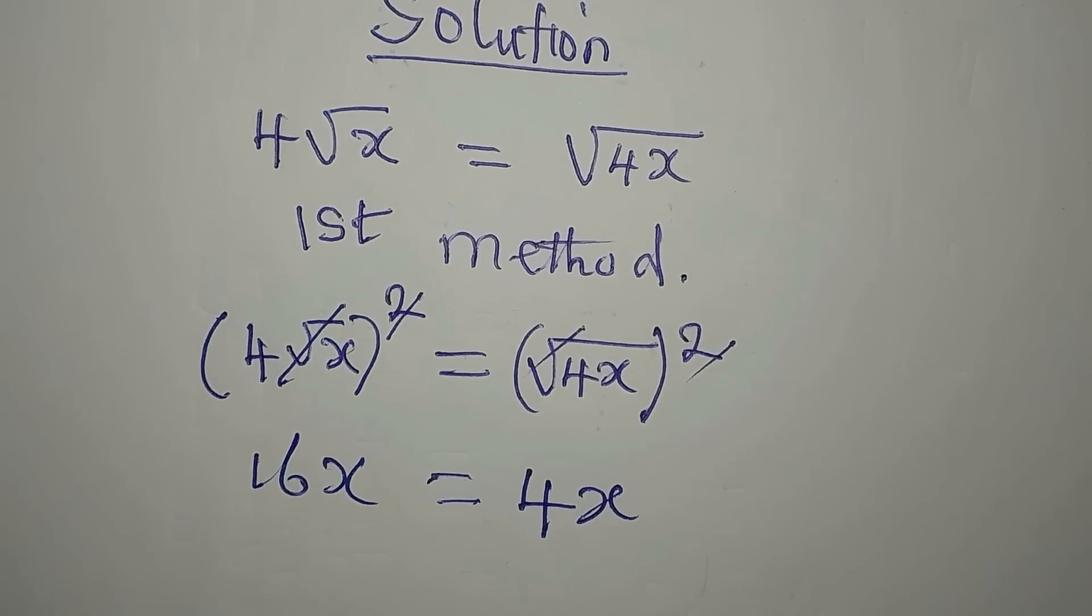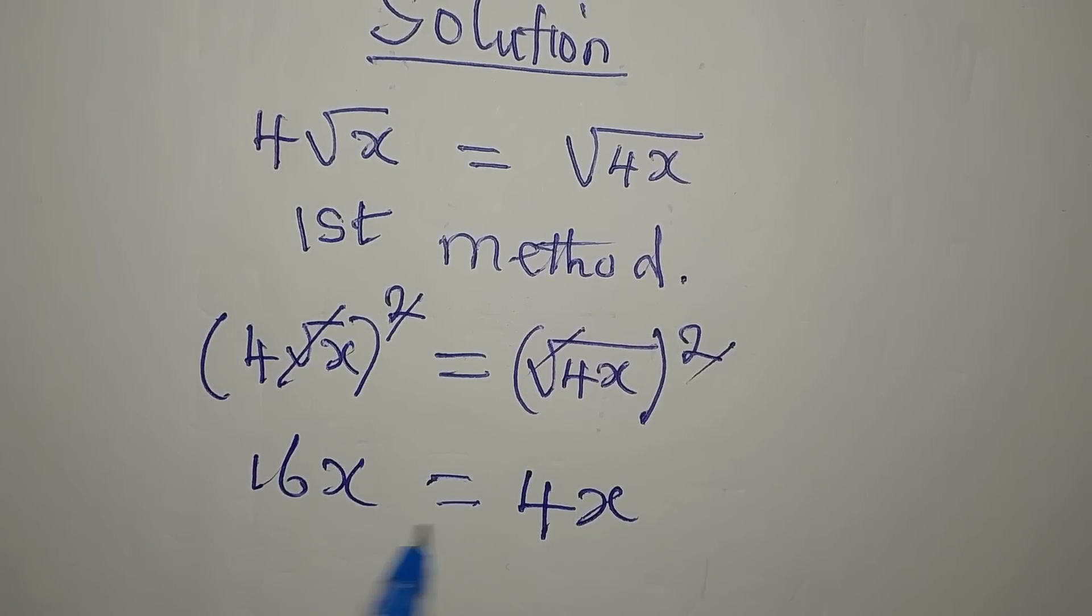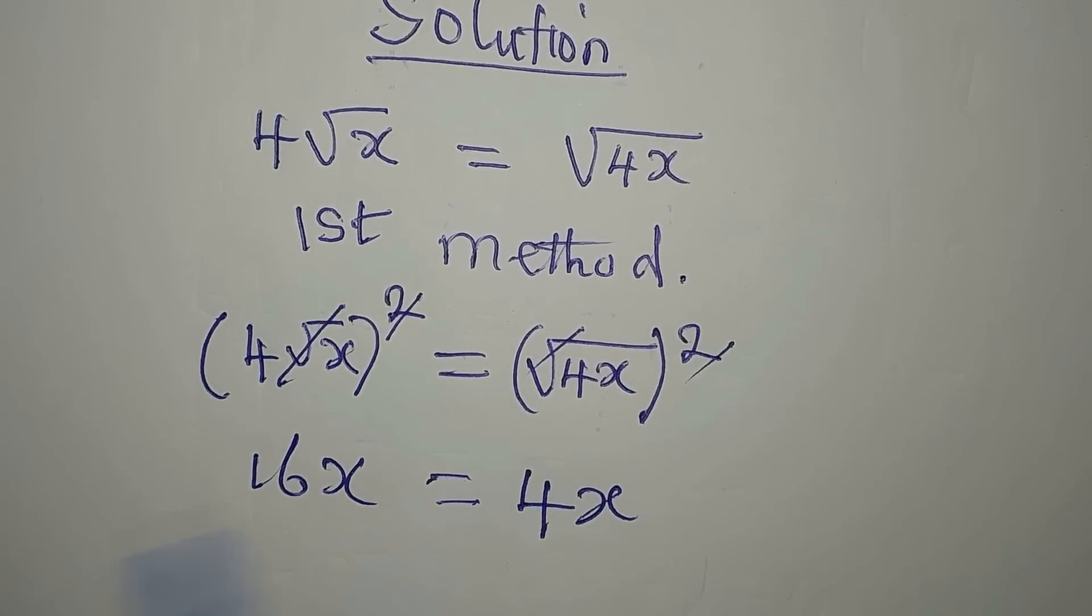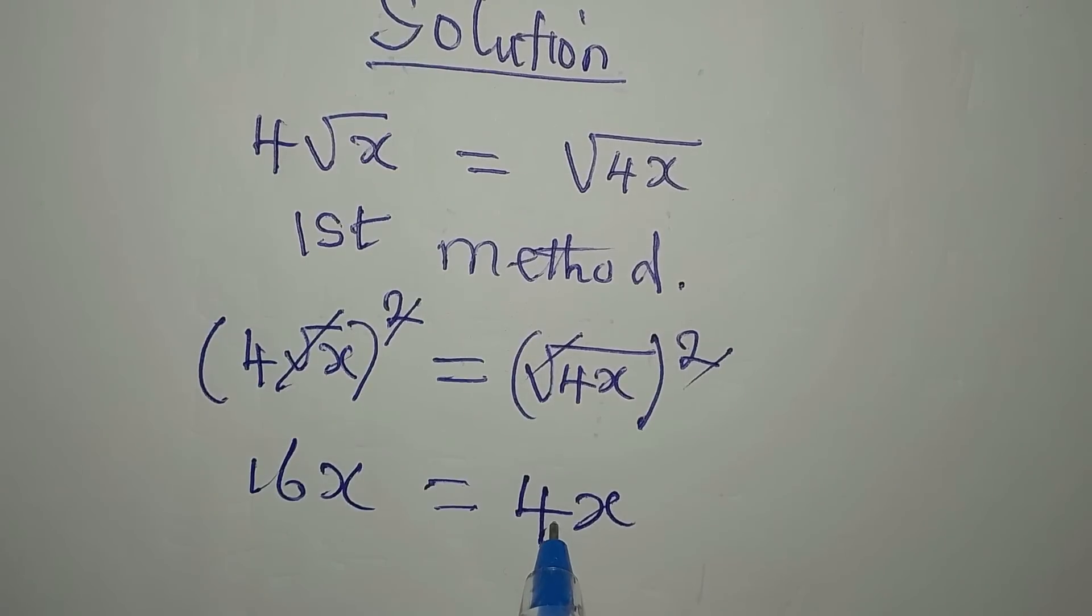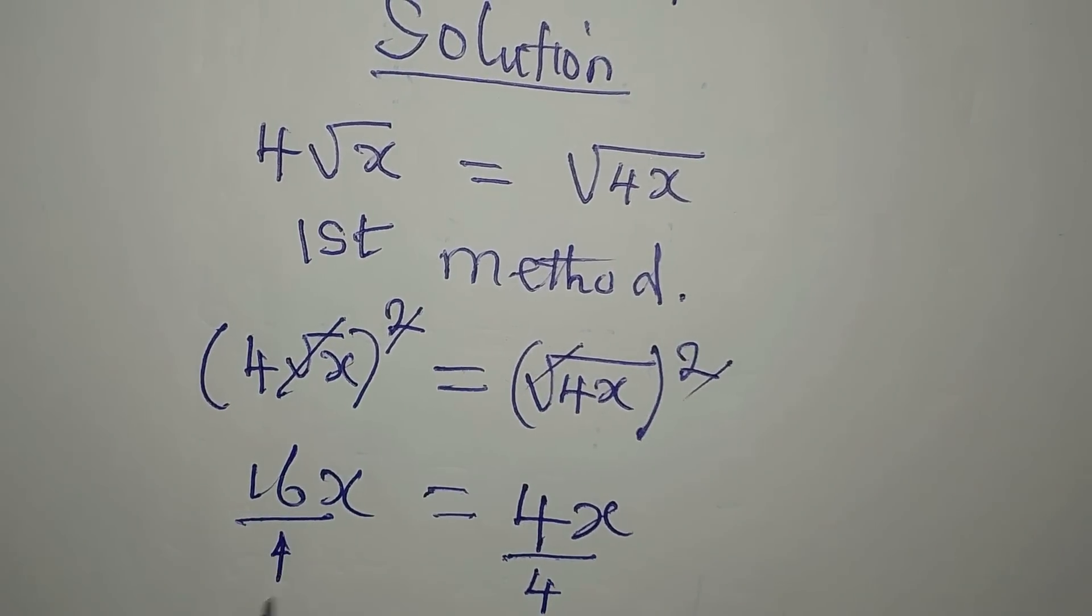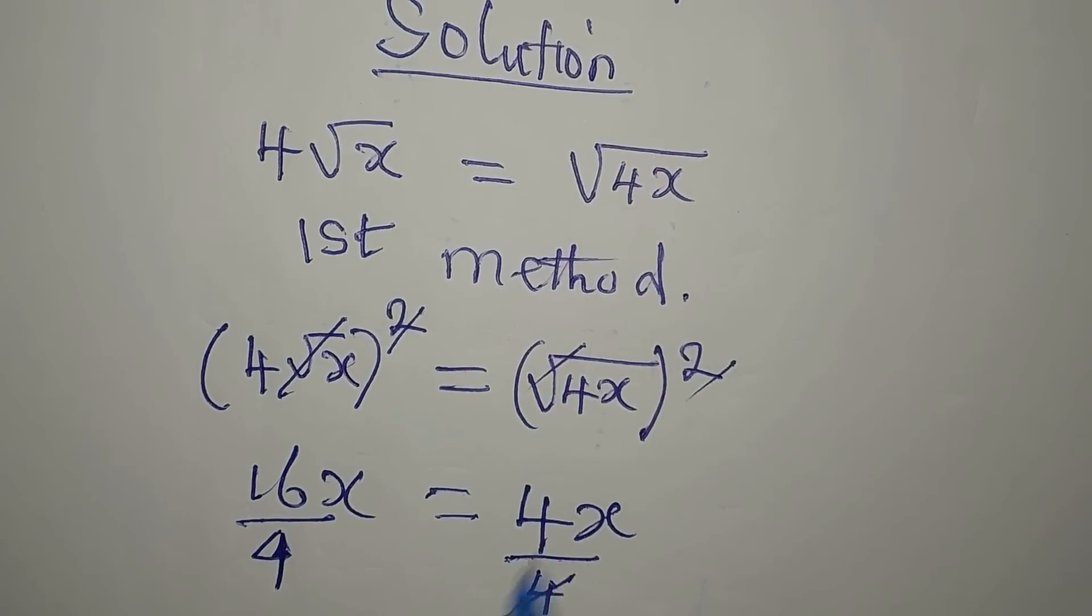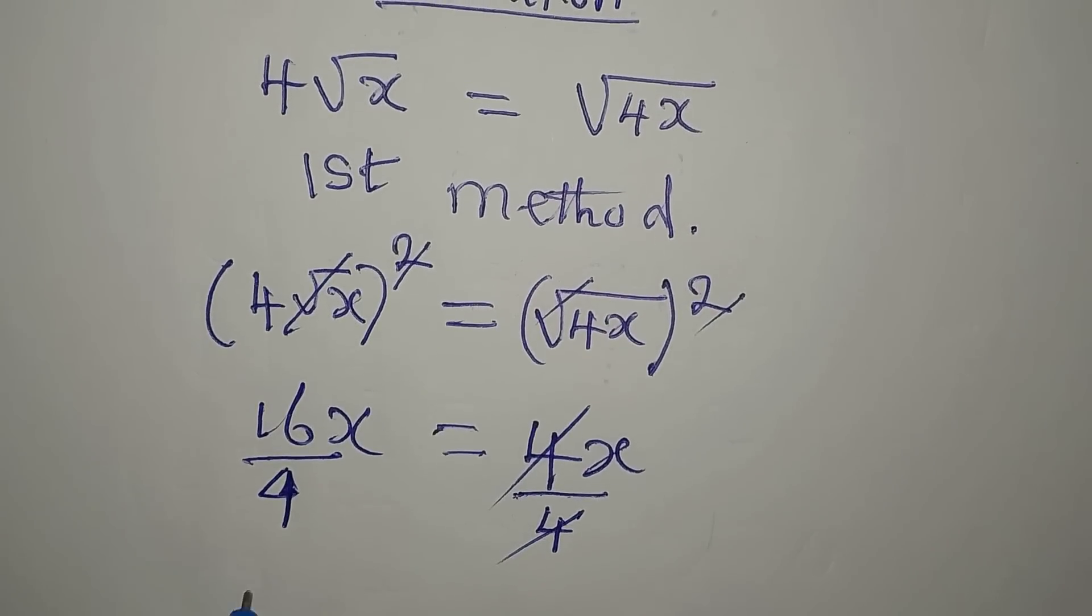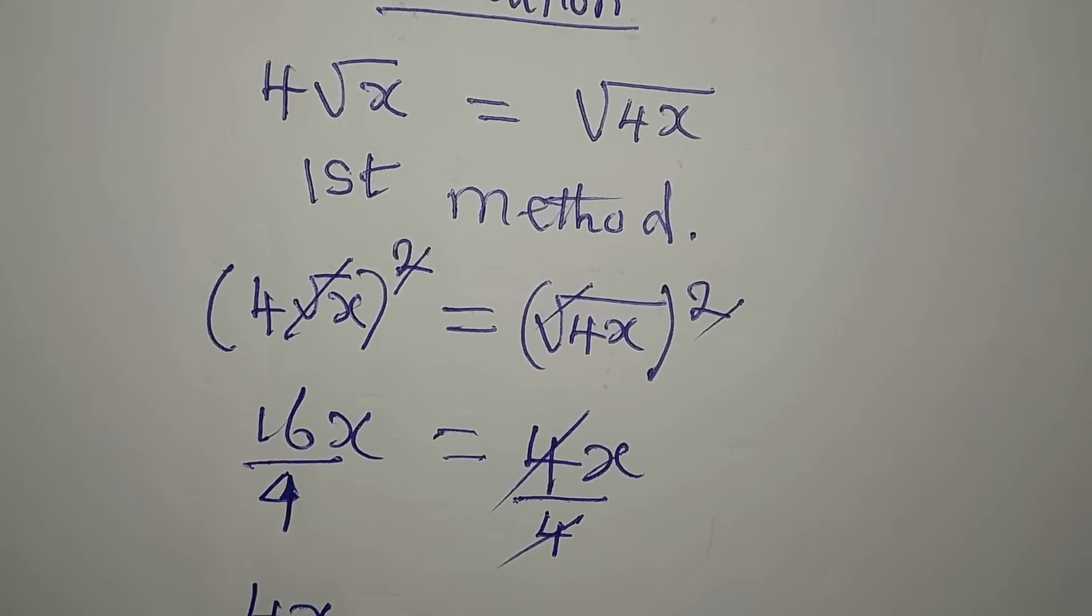The next step for us to take is do not divide both sides by x. Instead of dividing both sides by x, you can divide both sides by 4. So this will go, and then this will be divided. Then we have 4x equals x.